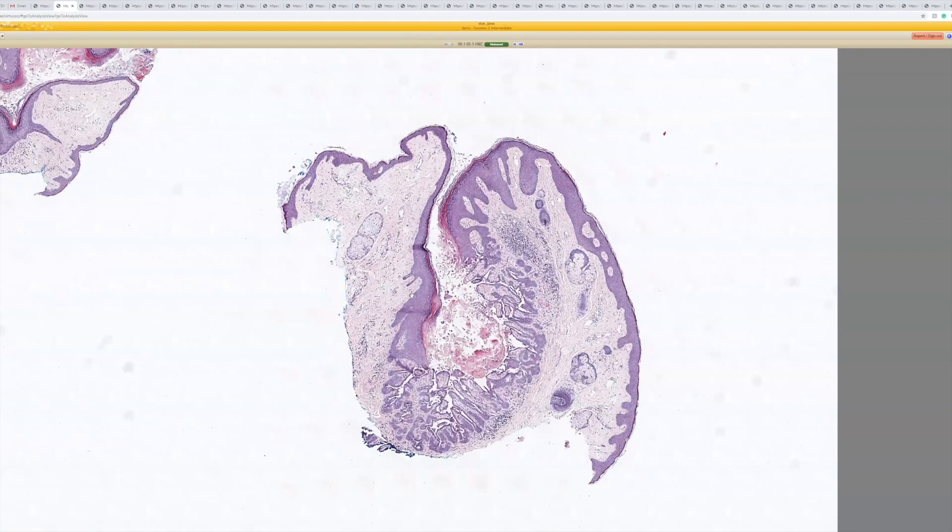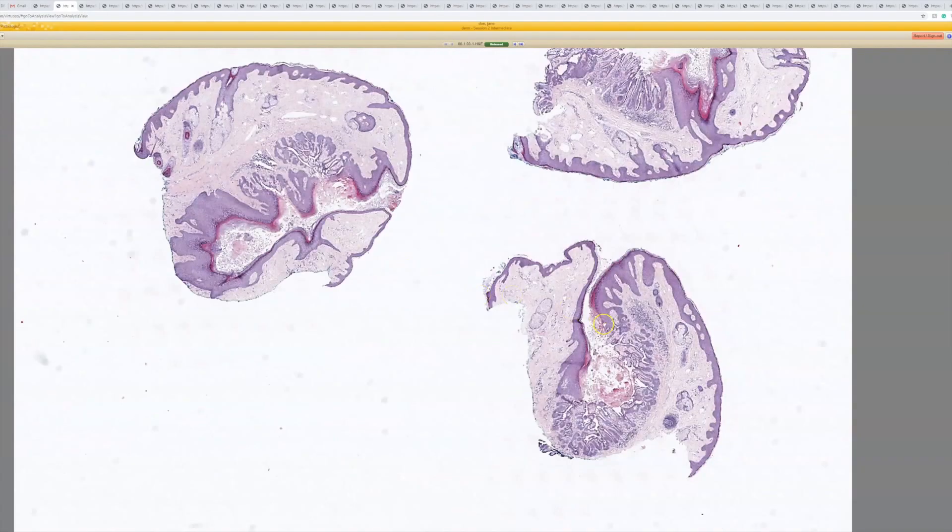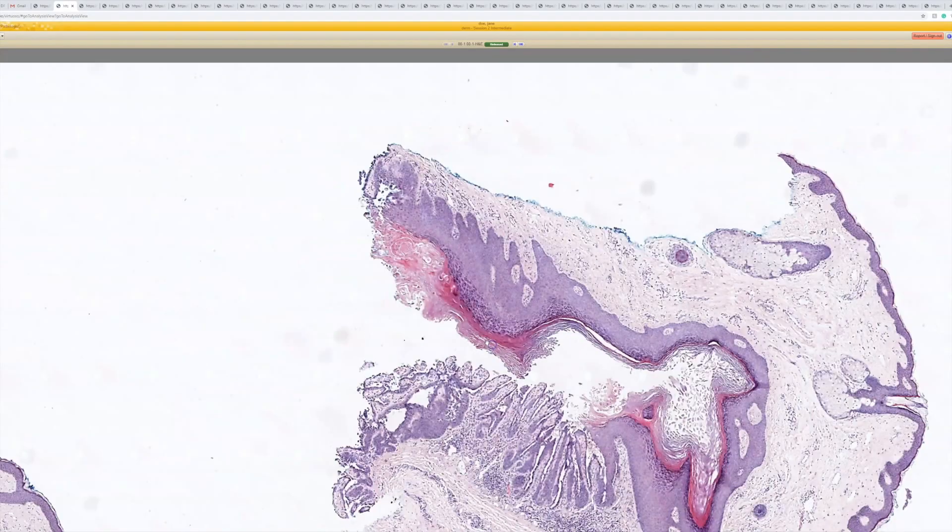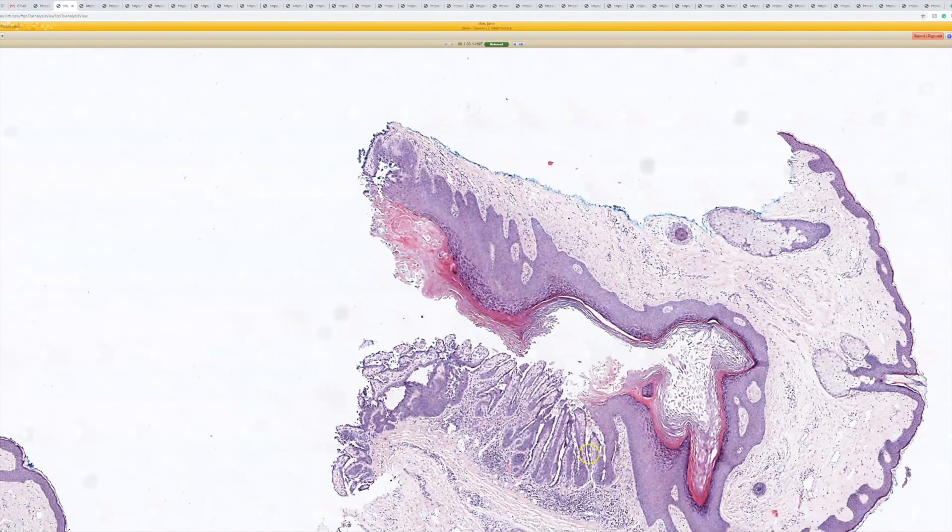But if you cut anywhere to the side of that, you're going to just see a cyst. So this lesion sometimes looks just like a cyst rather than showing that nice connection to the surface. So if you only learn this pattern, you're going to miss ones that are going to sometimes look like this and be cystic and not have a good connection, okay? So that's case one, warty dyskeratoma.